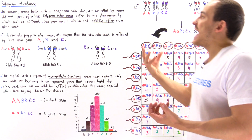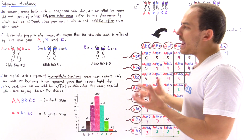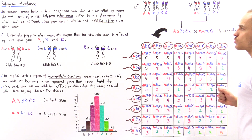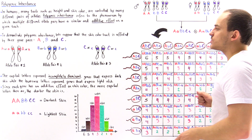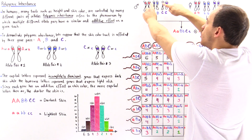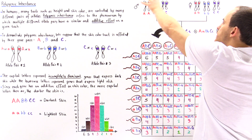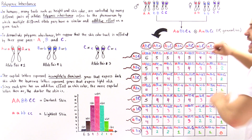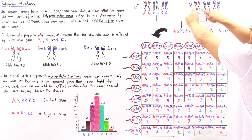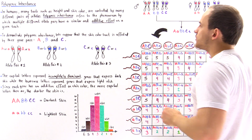To further demonstrate how this additive effect in polygenic inheritance actually works, let's carry out the following experiment. Suppose we have a male individual with the genotype AABBCC — uppercase A, uppercase A, uppercase B, uppercase B, uppercase C, uppercase C — and we mate this individual with a female that is homozygous recessive for all these genes: lowercase aa, lowercase bb, lowercase cc.